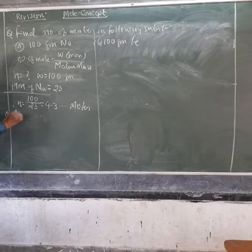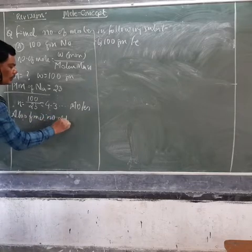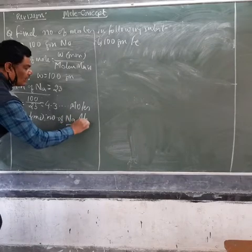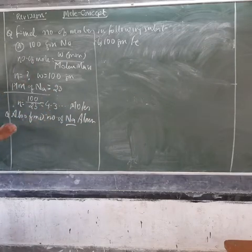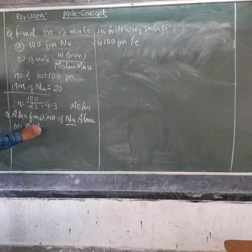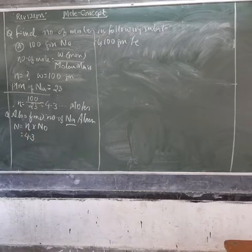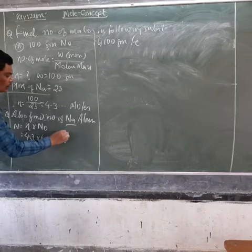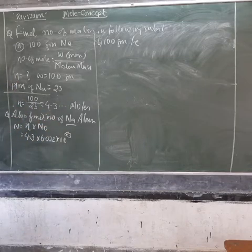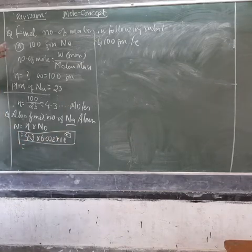Now additionally, find the number of sodium atoms. To find the number of atoms, we use: number of atoms = number of moles multiplied by Avogadro's number. The number of moles is approximately 4.3, so it is 4.3 multiplied by 6.022 × 10²³. Simply solve this to get the answer.